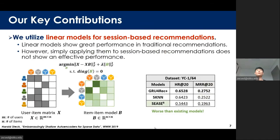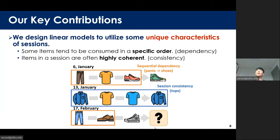First, we utilize linear models for session-based recommendation. The model shown below is a linear model for traditional recommendation systems that achieves state-of-the-art performance. We can apply this model to session-based recommendation by replacing users with sessions. However, this simple method is much worse than existing session-based models. So, we formulate the objective function of linear models specifically for session-based recommendation. Second, some unique characteristics are often observed in sessions, and we utilize them for model design.